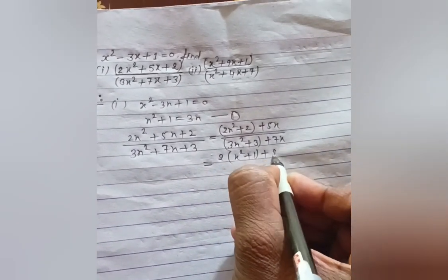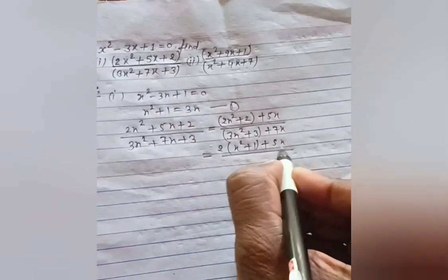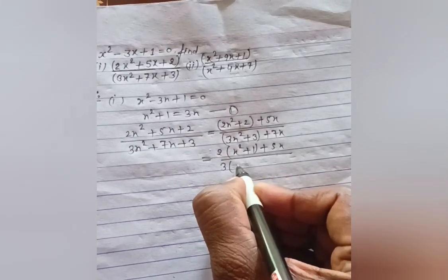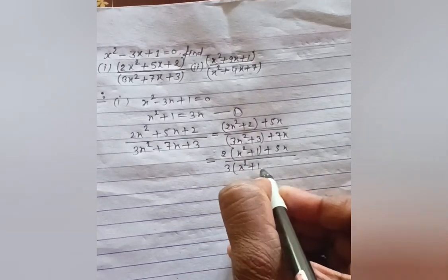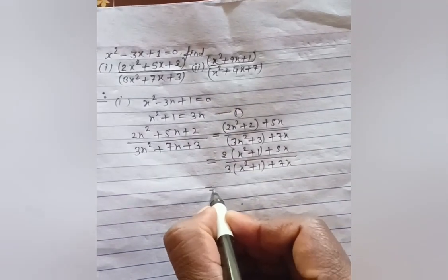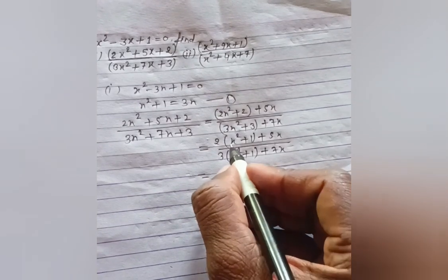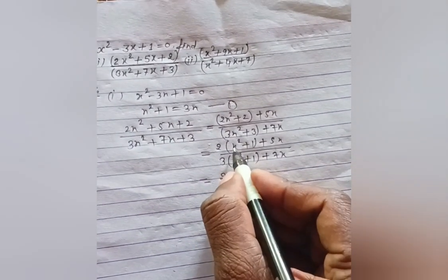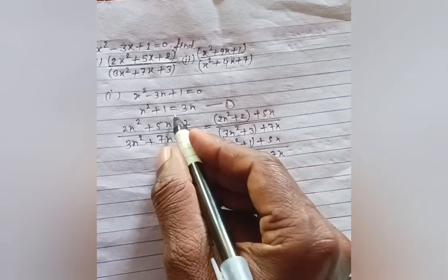+ 7x. So we have [2(x² + 1) + 5x] / [3(x² + 1) + 7x]. Since we know x² + 1 = 3x, we can substitute